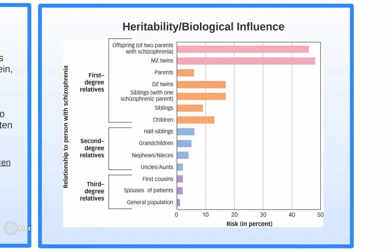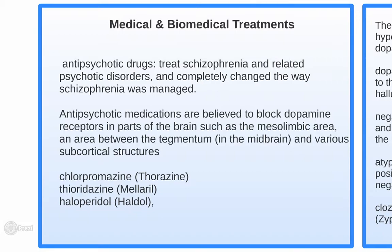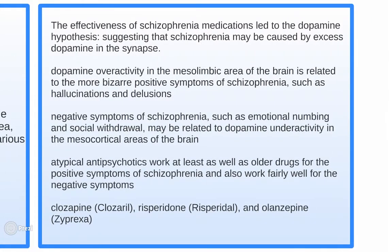Schizophrenia has a pretty high heritability rate — about 50 percent for monozygotic twins — and if you have parents with schizophrenia, you're very likely to also have it. Antipsychotic medications are believed to block dopamine receptors in parts of the brain such as the mesolimbic area, tegmentum, and various subcortical structures. Some drugs include Thorazine and Haldol. The effectiveness of schizophrenia medications contributed to the dopamine hypothesis.